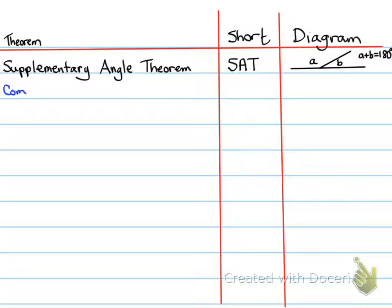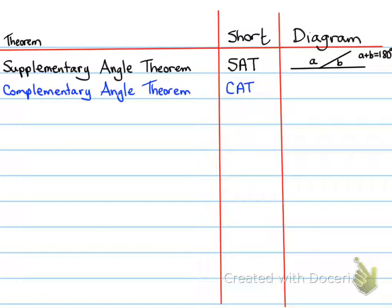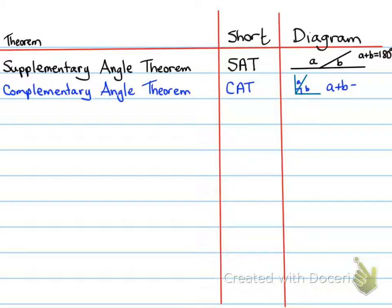Next is the Complementary Angle Theorem, also known as CAT. A complementary angle is a 90-degree angle. This theorem states that if a 90-degree angle is broken up into two or more parts, the sum of all those parts — A plus B — will equal 90 degrees. That is the Complementary Angle Theorem.